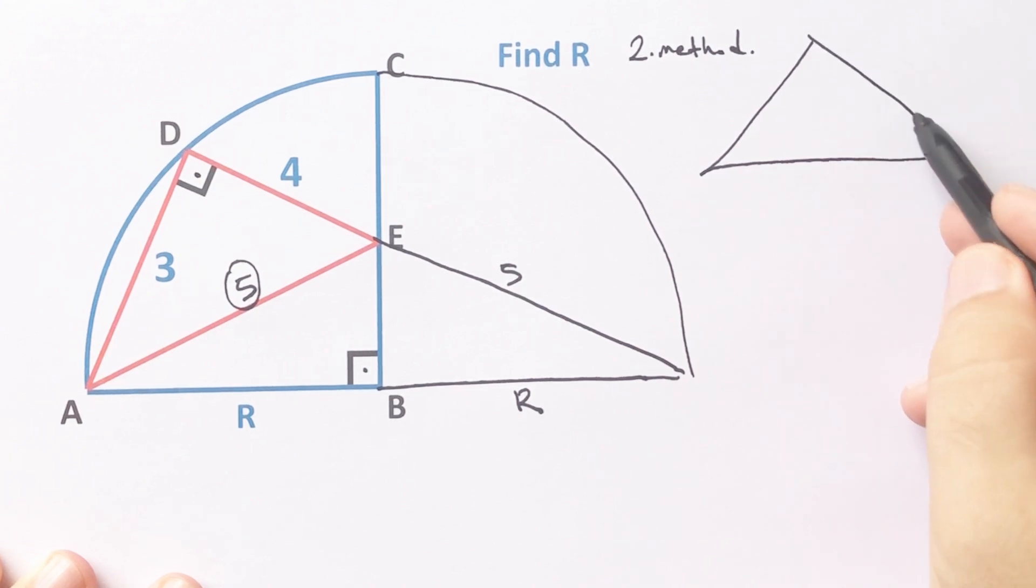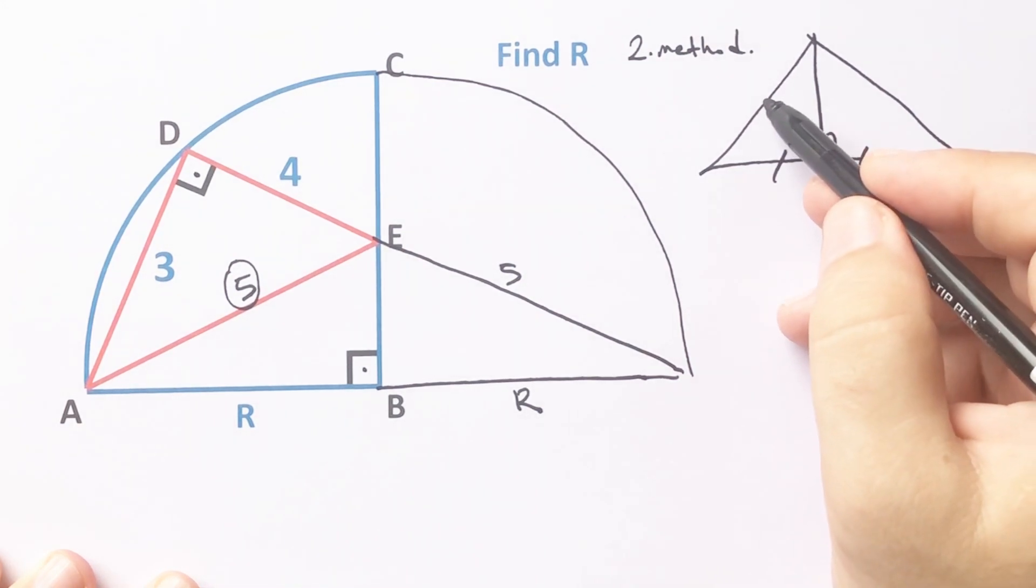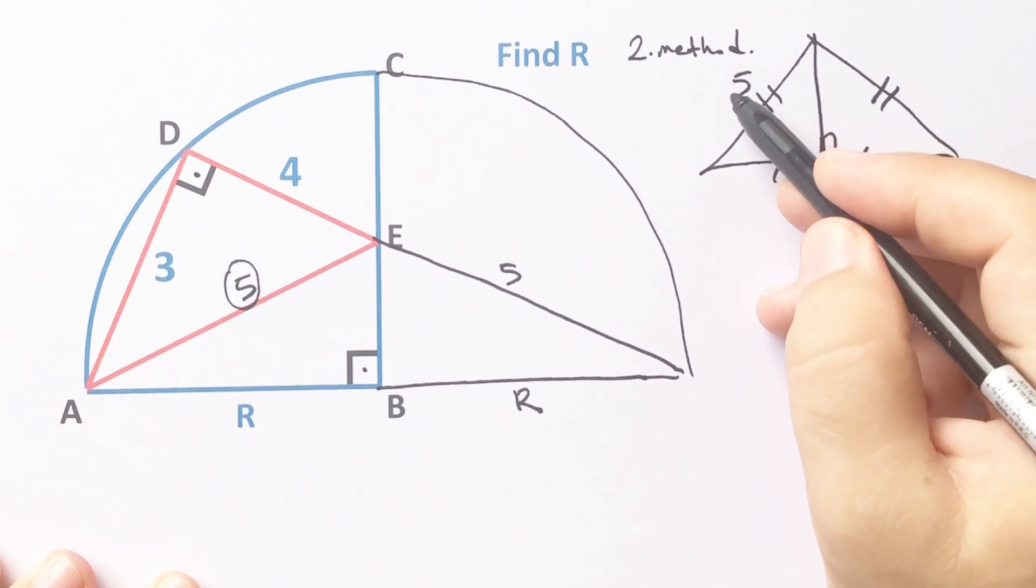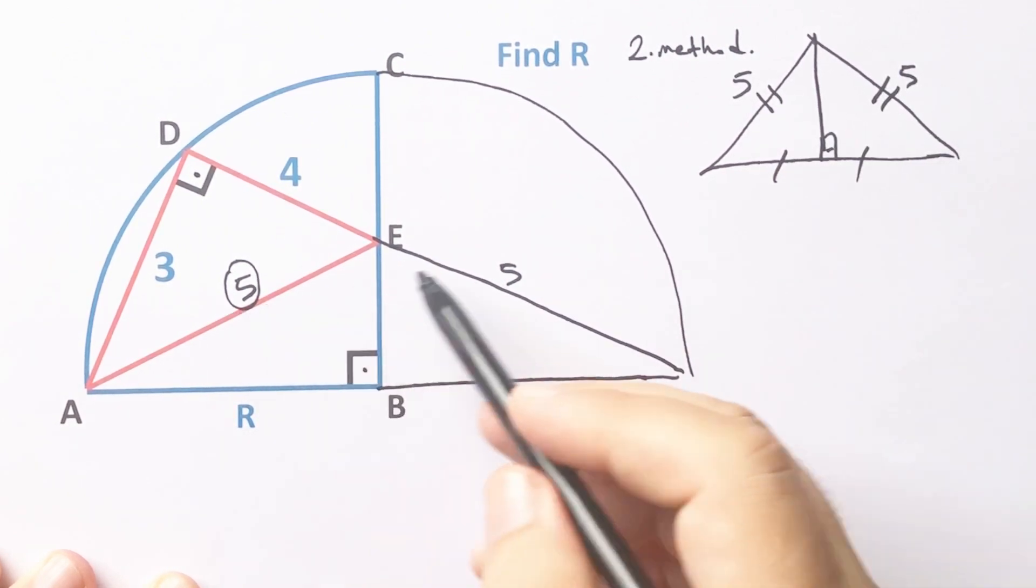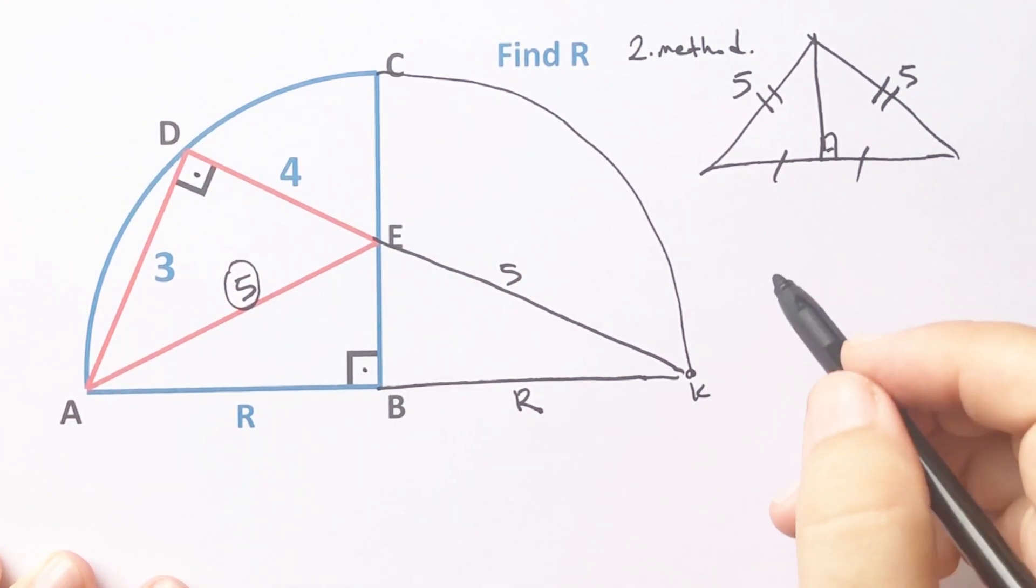Let's remind you, if this angle is 90 degrees and the base is divided into two equal parts, these two lengths must be equal. So if here is 5, this length must be 5 units. If you focus on the biggest triangle, let's call here K point.